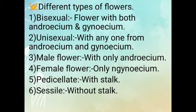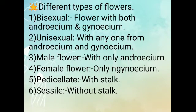Different types of flowers. First: Bisexual — flower with both Androecium and Gynoecium. Second: Unisexual — with anyone from Androecium and Gynoecium. Third: Male Flower — with only Androecium. Fourth: Female Flower — with only Gynoecium. Fifth: Pedicellate — with stalk. Sixth: Sessile — without stalk.